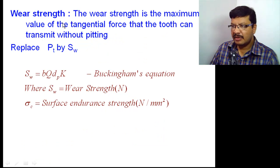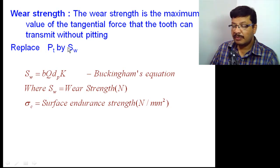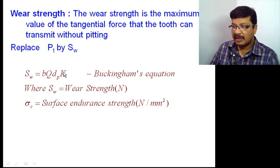Wear strength means the maximum value of tangential force that the gear teeth can transmit without pitting. Without pitting, the value of pt is the wear strength Sw, so Sw = b · q · dp · k. The k value decides whether the gear teeth will experience pitting or not, because it is related to surface hardness properties.